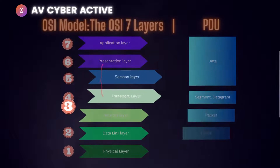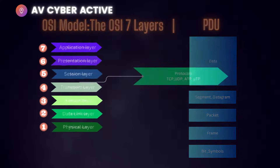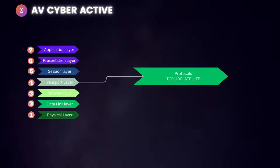The PDU or protocol data unit at each layer is different. For layer 4, the transport layer, it's datagrams or segments, and for the session layer it's data. The protocols most used in the transport layer are UDP, TCP, ATP, and micro transmission protocol.